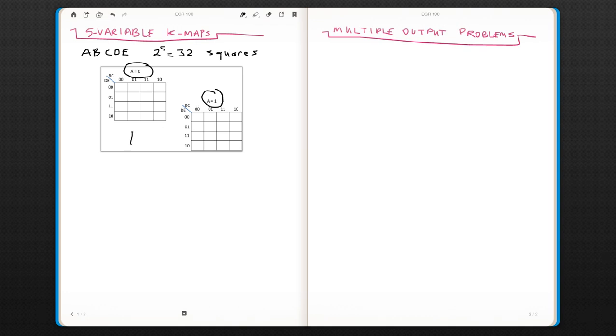So with this map, A is always 0. For this map, A is always 1.